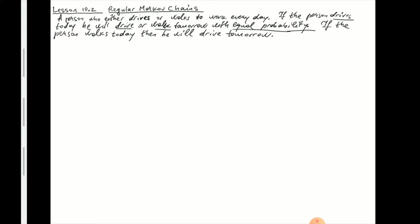We're going to write the transition matrix immediately. This is a two-by-two matrix. The rows represent the state in a given day — driving or walking — and the columns represent the states for the next day. Because the person is equally likely to drive or walk tomorrow if they drove today, the probabilities are 0.5 and 0.5 on the first row. So p11 is the transition from driving today to driving tomorrow, and p12 is driving today to walking tomorrow.